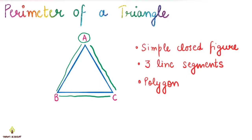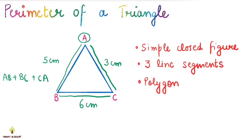Suppose AB is 5 cm, BC is 6 cm, and AC is 3 cm. So the perimeter means distance around the figure. I will add AB plus BC plus CA — the length of the three sides. So 5 cm plus 6 cm is 11, and 11 plus 3 is 14. So my answer is 14 cm. This is the perimeter of a triangle.